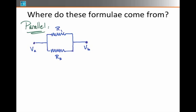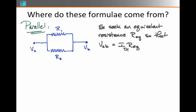For the parallel formula, the formula comes from the fact that we seek an equivalent resistance Req such that the voltage drop from point A to point B equals the total current passing out of point A times some equivalent resistance R sub eq. Now I also know that this total resistance that's about to leave point A is going to split.